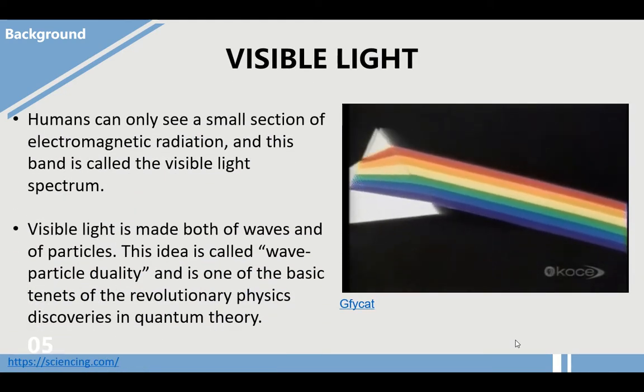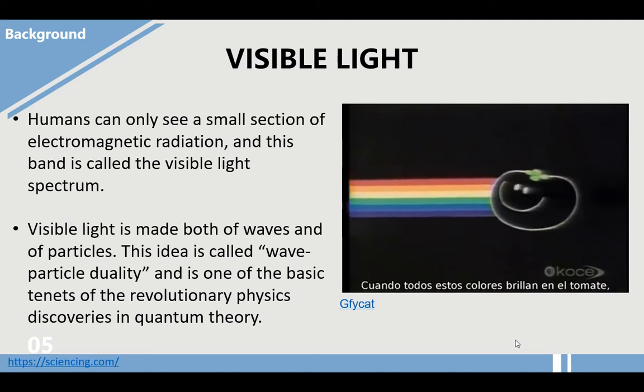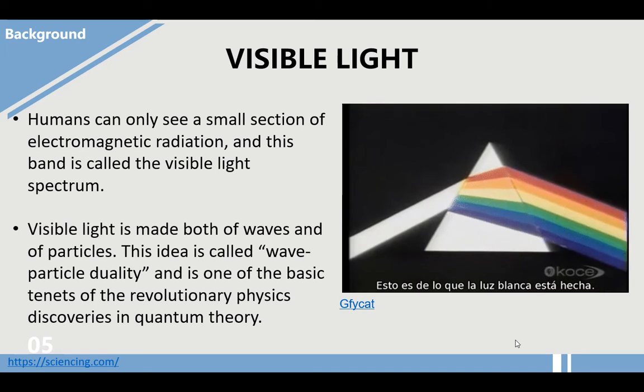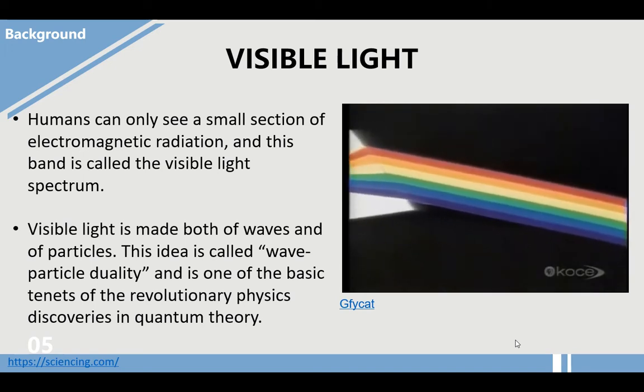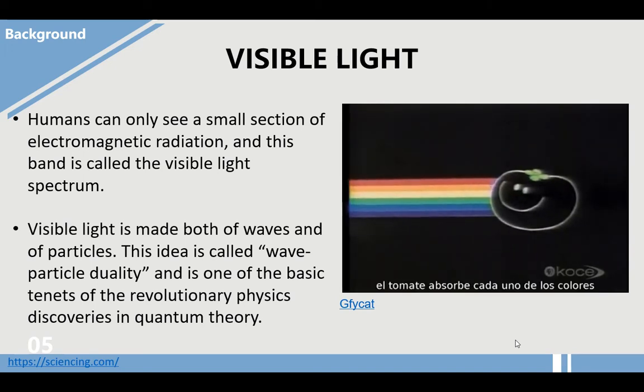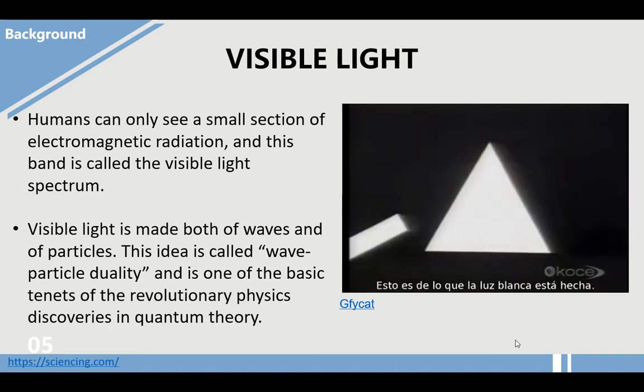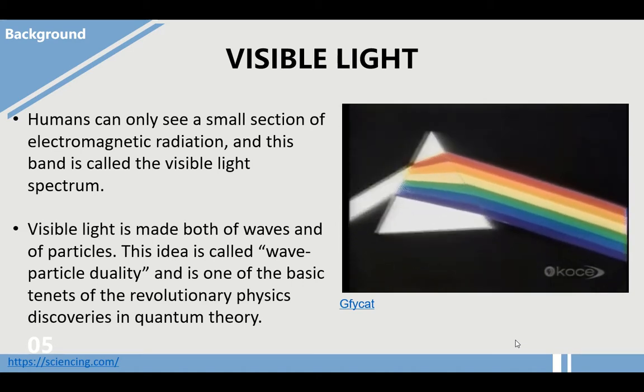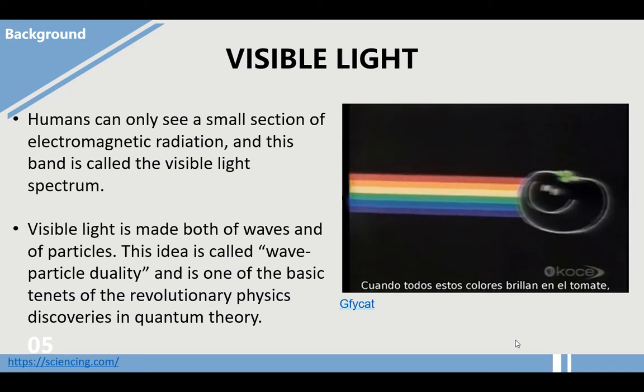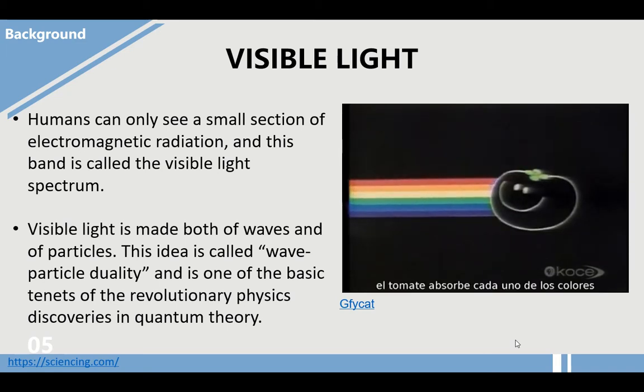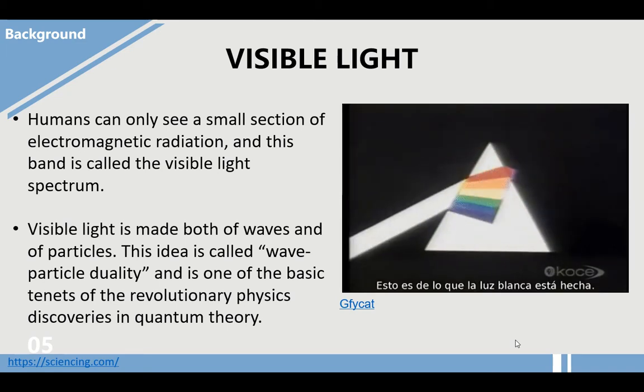Humans can only see a small section of electromagnetic radiation, and this band is called the visible light spectrum. Visible light is made both of waves and particles. This idea is called wave-particle duality, and is one of the basic tenets of the revolutionary physics discoveries in quantum physics.